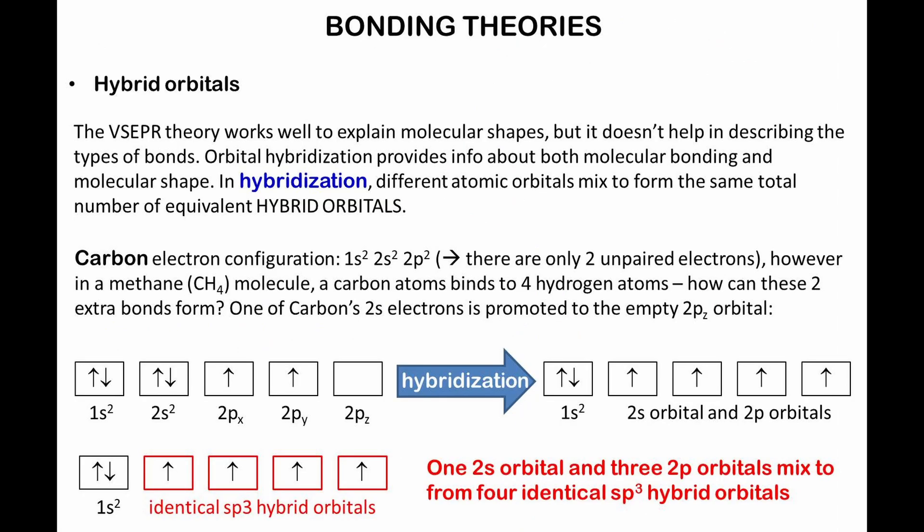The VSEPR theory works well to explain molecular shapes, but it doesn't help in describing the types of bonds. Orbital hybridization provides info about both molecular bonding and molecular shape. In hybridization, different atomic orbitals mix to form the same total number of equivalent hybrid orbitals.